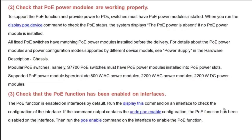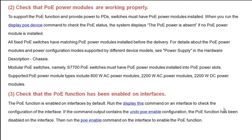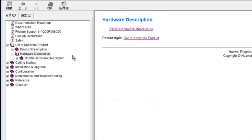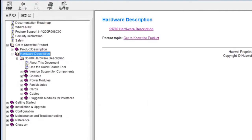Check that PoE power modules are working properly. To support PoE and provide power to PDs, switches must have PoE power modules installed. If no PoE module is installed, the system will display 'PoE power is absent' when you run the display PoE device command. All fixed PoE switches have matching PoE power modules installed before delivery. For details about PoE power modules and power configuration modes supported by different device models, see Power Supply in Hardware Description Chassis.